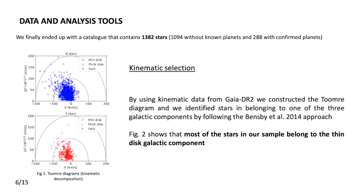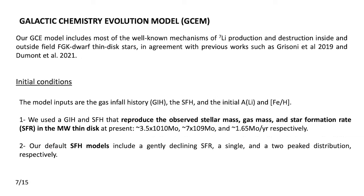We wanted to study the lithium distribution in relation to the formation of the thin disk, so we used Gaia data to construct Toomre diagrams and select only stars belonging to the thin disk, excluding thick disk and halo stars. We restricted our analysis to thin disk stars, and after this selection we got our final plot of the lithium abundance distribution, which I will show shortly.